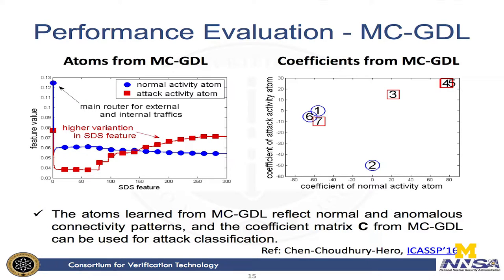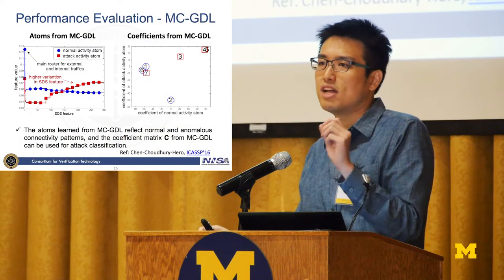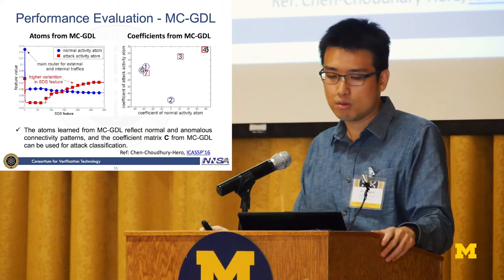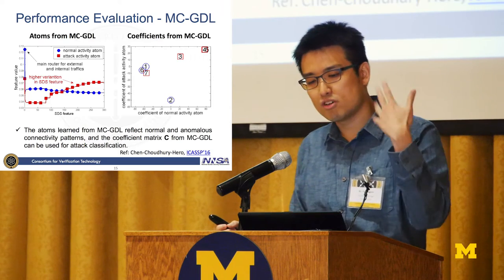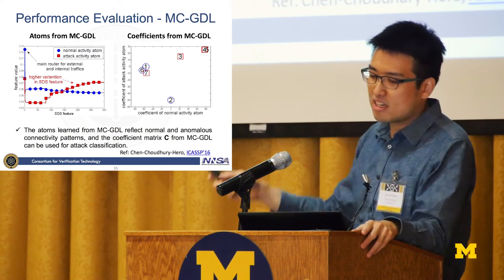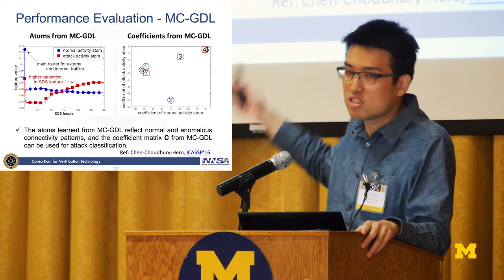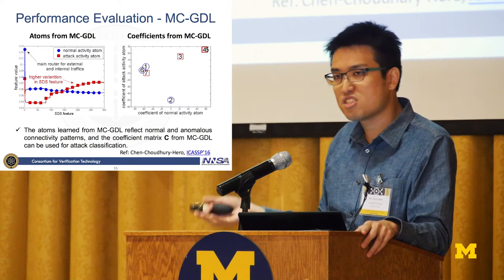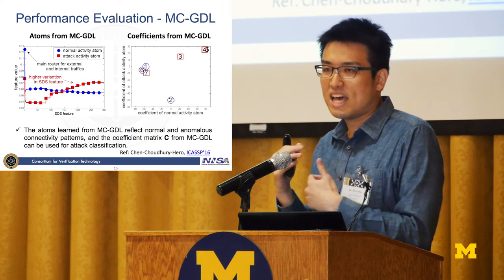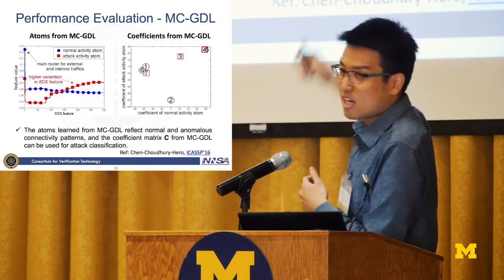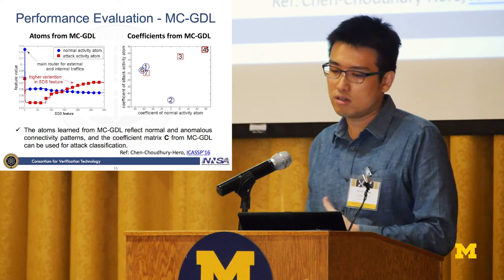For graph dictionary learning, we learn two atoms from the seven days of graphs. The blue atom represents normal activity — with one dominant node corresponding to the router connecting most nodes. The red atom has higher variation, corresponding to attack activity. Plotting the representation coefficients per day and applying clustering or classification on these coefficients, attacks can be detected in the dictionary space representation, enabling successful anomaly detection of these cyber systems.